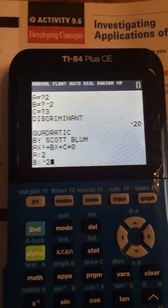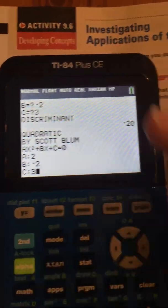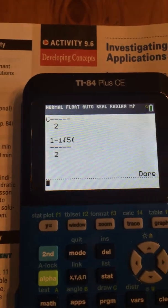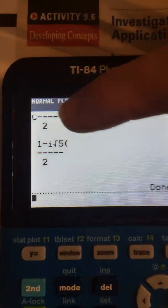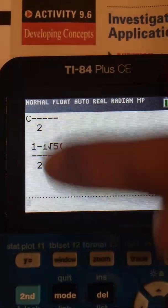Okay? It tells us our discriminant is negative 20. And it says negative 20. There are no real solutions. But we're in Algebra 2, and we have to come up with the not real solutions, the imaginary ones. So I put it in again, 2, enter, negative 2, enter, 3, enter, and it's going to tell me the solutions.